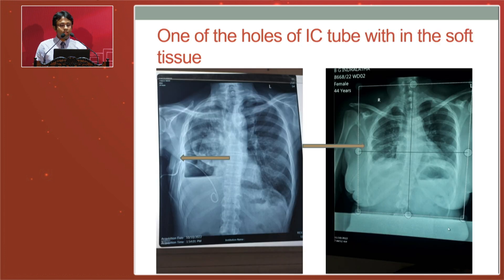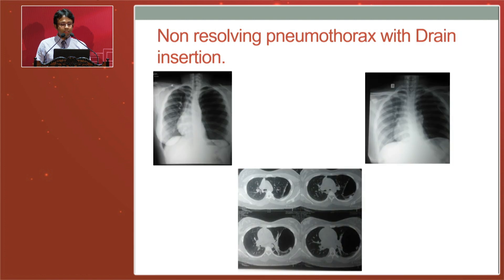Sometimes the IC tube can be placed intra-abdominally when the diaphragm is elevated and the drain enters the abdominal cavity. The x-ray shown here with an arrow demonstrates displaced tube holes outside the chest cavity. In the upper x-rays, a patient presenting with expanding pneumothorax and tension pneumothorax had a drain placed, but the pneumothorax persisted. An urgent CT revealed an expanding bulla rather than a simple pneumothorax — we had to perform urgent surgery with a bullectomy on this young girl.